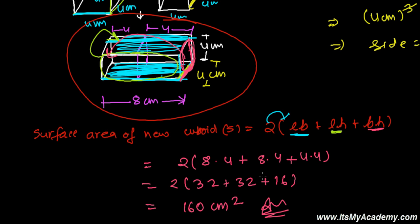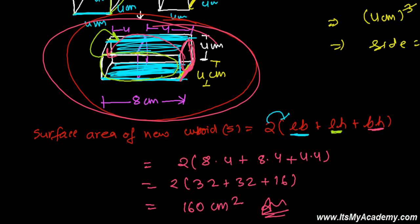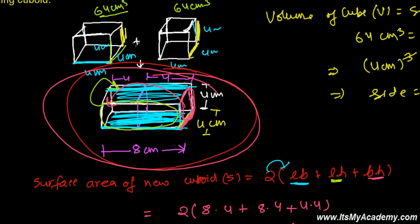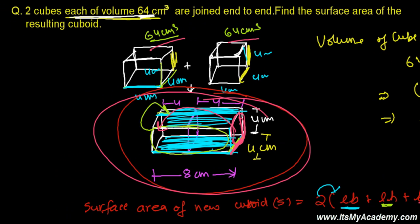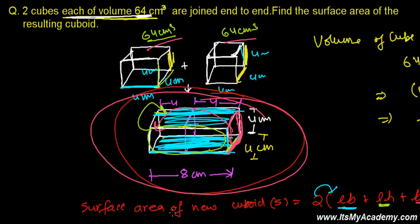This is the total surface area of the new cuboid formed after combining the two cubes, each with volume 64 cm³. This is how we need to first understand the question, represent it in a diagram, and then solve it step by step. If there is any confusion, please feel free to comment below — I'll definitely reply back. See you in the next video!